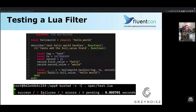Here we do the same thing that FluentBit would do: in line three we load our code, we set some inputs in parameters eight to twelve, and then we exercise our handler in line fourteen. We inspect the record — the 'v' in this context — and then assert that full value equals 'hello world'. So now we're testing it, and you can see how simple it is to run Busted.